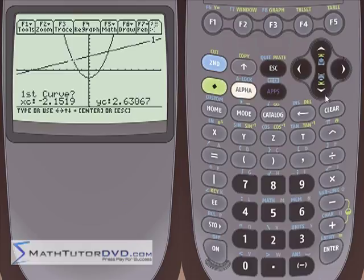First thing it's going to ask is what is the first curve? What is the first curve? You have to realize that you might have ten graphs on the screen at any given time. So to find an intersection point, the calculator is going to need to know what two graphs you're interested in looking at.